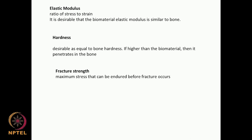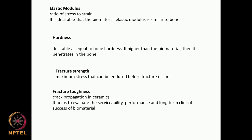Then comes fracture strength — what is the maximum stress the material can take up before it actually fractures? Fracture means breaks. Fracture strength is very, very important. Fracture toughness is different: if there is a crack, how does the crack progress? That is called fracture toughness, and it is especially relevant in ceramic-like materials. It helps evaluate the serviceability, performance, and long-term clinical success of a biomaterial. Fracture strength is when the material fractures; fracture toughness is if there is a crack, how it starts propagating — that tells you the toughness of the material.